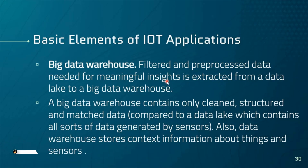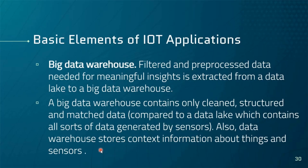On the cloud, there are big data warehouses where all incoming data is aggregated, filtered, and pre-processed to extract meaningful insights. Big data warehouses contain cleaned, structured, and matched data. They store context information about things and sensors — for example, a temperature value sent along with the device ID, device type, and a full timestamp.